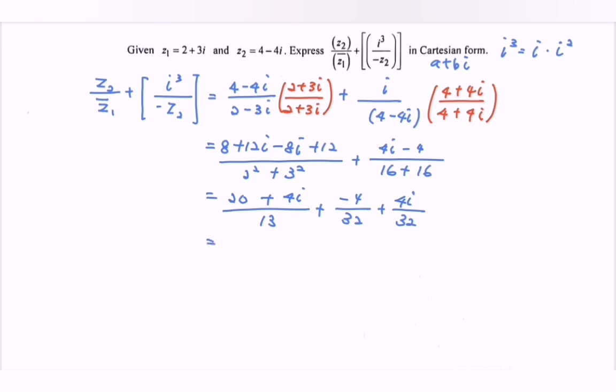Make use of the situation. We have 20 over 13 minus 1 over 8, and then plus 4i over 13 plus i over 8.